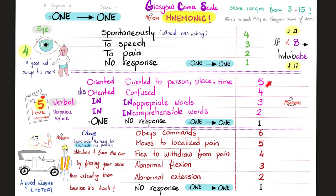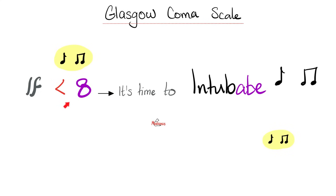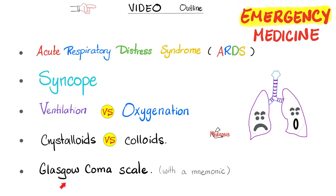Add up the total score. If it is less than 8, it is time to intubate. Today we talked about the Glasgow Coma Scale.